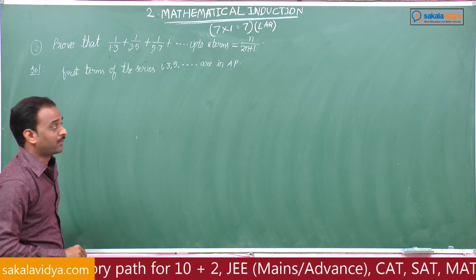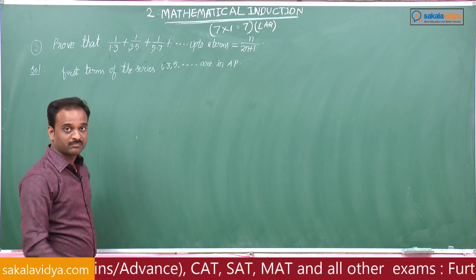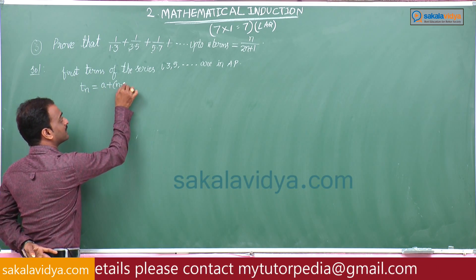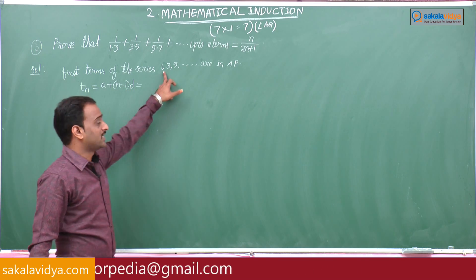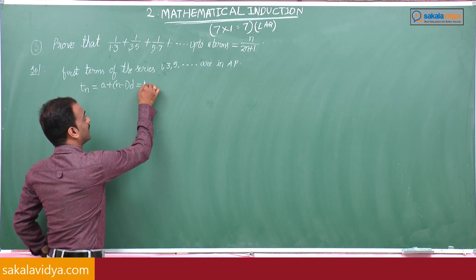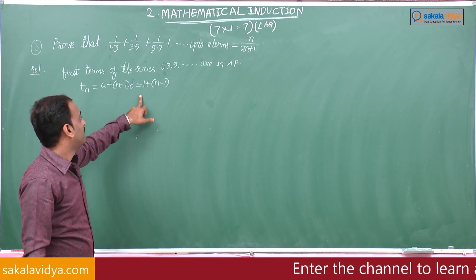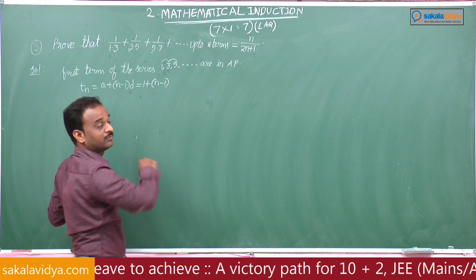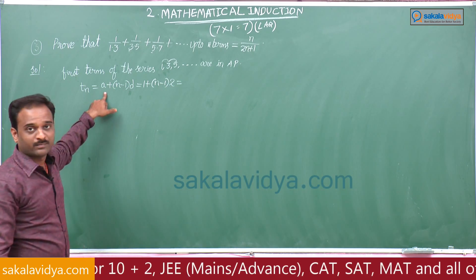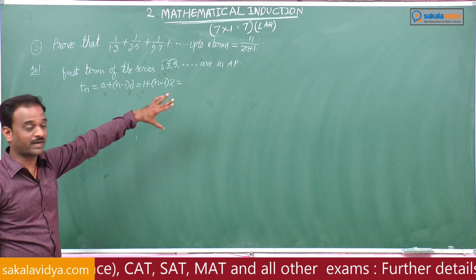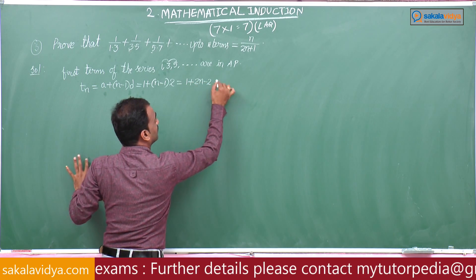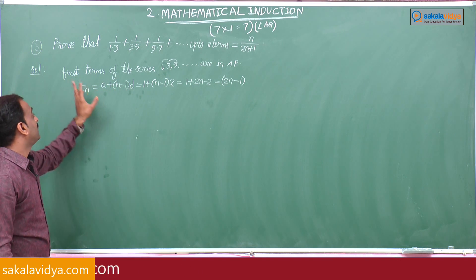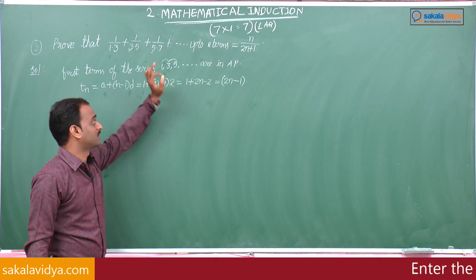To find the nth term of values in arithmetic progression, the formula is a + (n−1)d. Here a = 1, and d = T2 − T1 = 3 − 1 = 2. So the nth term = 1 + (n−1)×2 = 1 + 2n − 2 = 2n − 1. The nth term of the first terms 1, 3, 5, ... is 2n − 1.